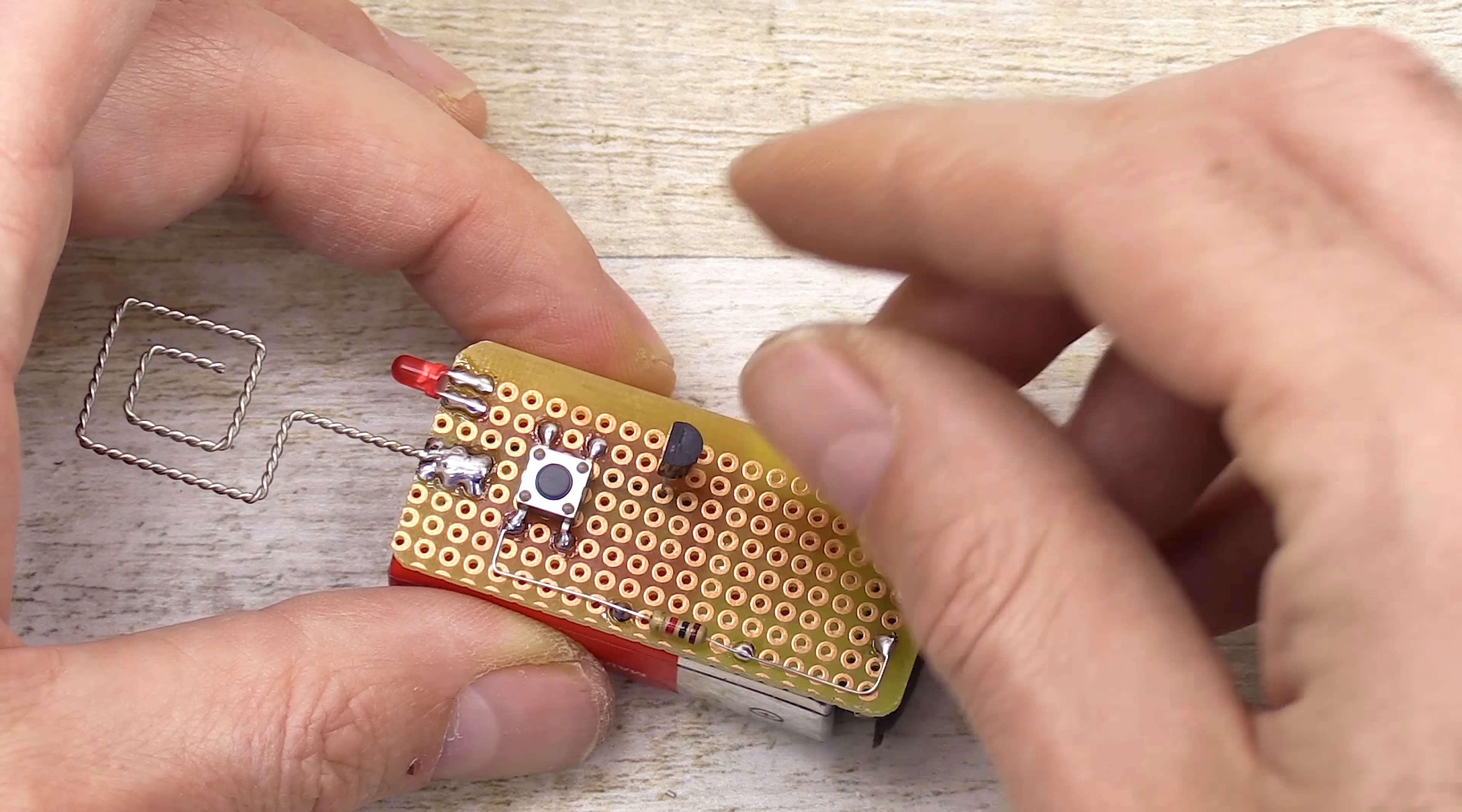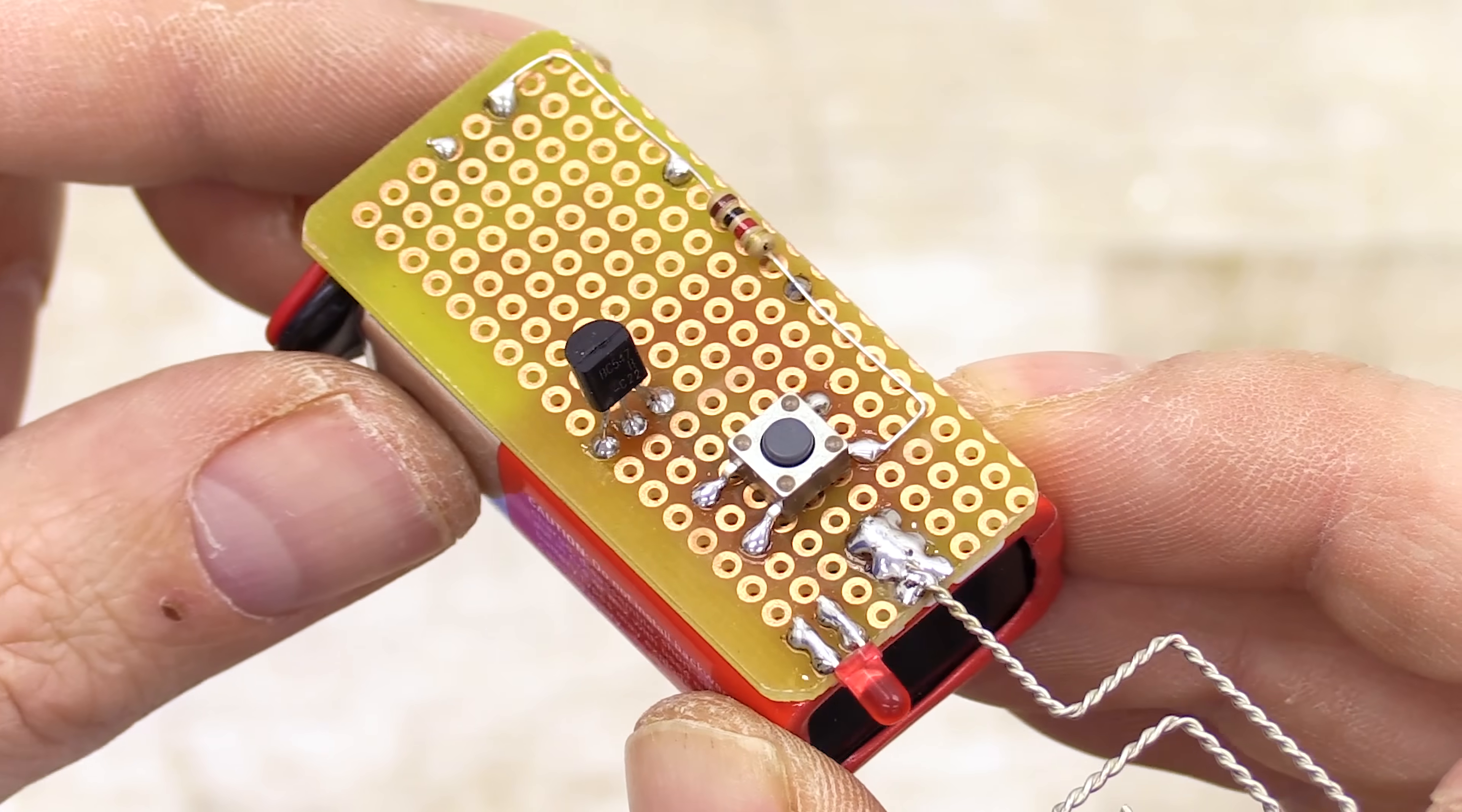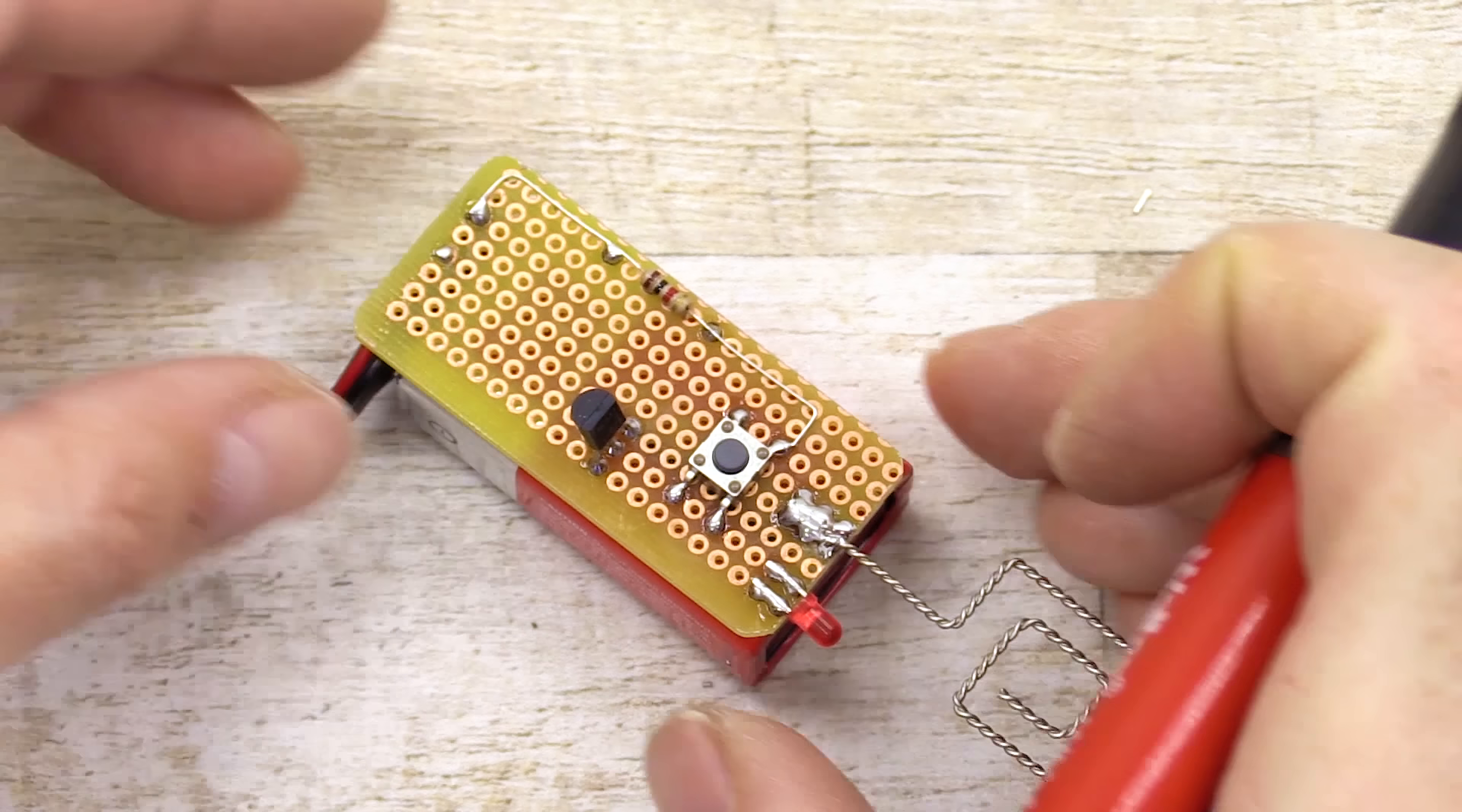Now I'll proceed with placing the three BC547 NPN transistors. These components are the core of the device. I'll explain how they work in just a moment.